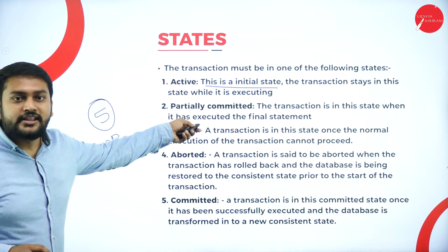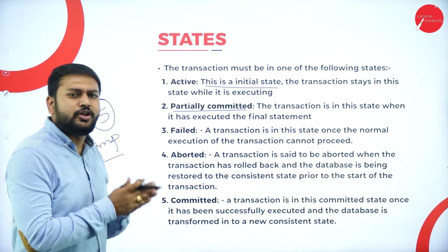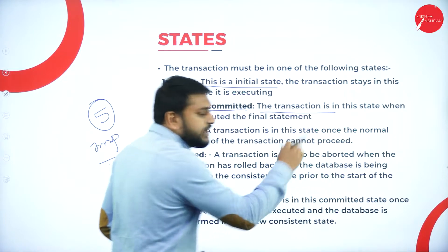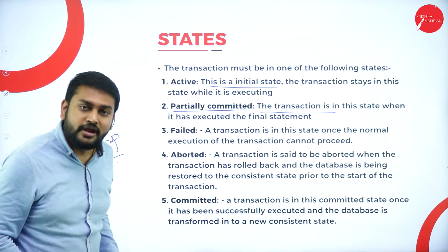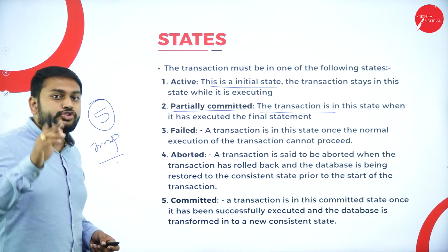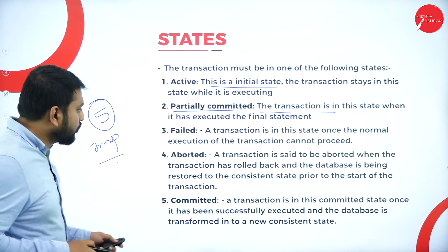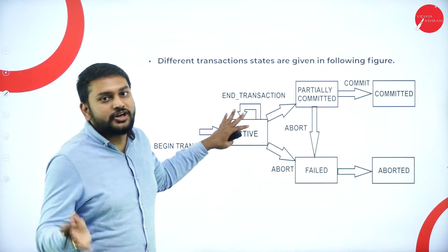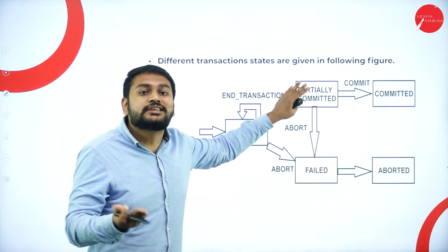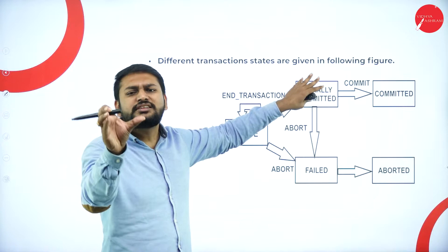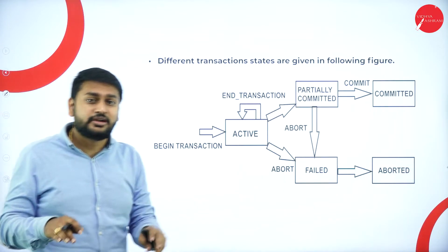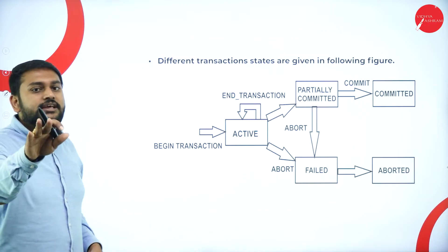The next state is partially committed. This means I have almost executed all the statements in the transaction. The transaction is in this state when it executes the final statement — that is what I will call the partially committed state. So from the active state, I move to the partially committed state. I have executed the final statement but have not completely saved the transaction yet.